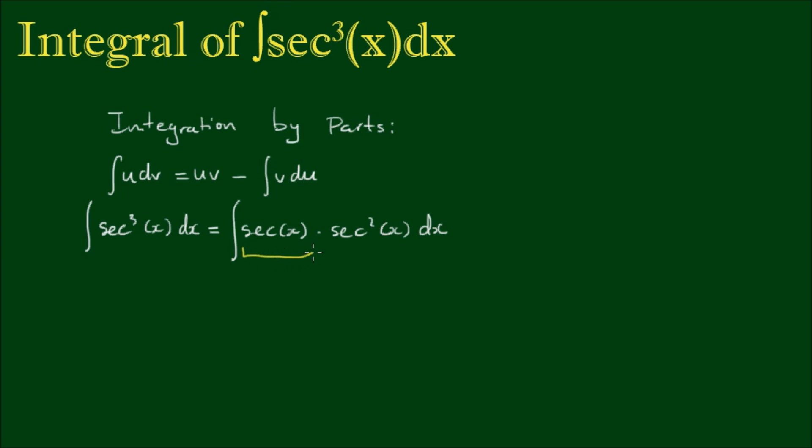And the first part I can say is equal to u. So we let u equal sec(x). And we let this sec²(x) dx equal dv. So dv equals sec²(x) dx.